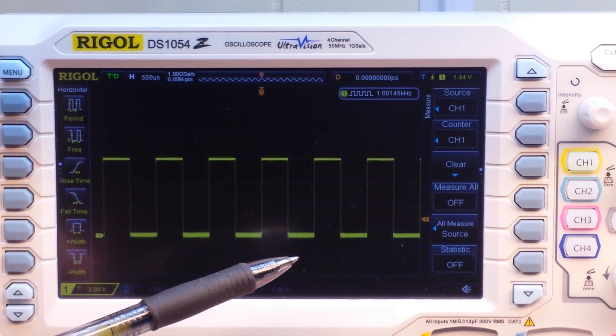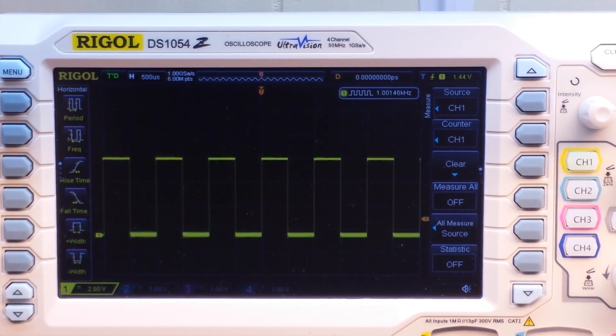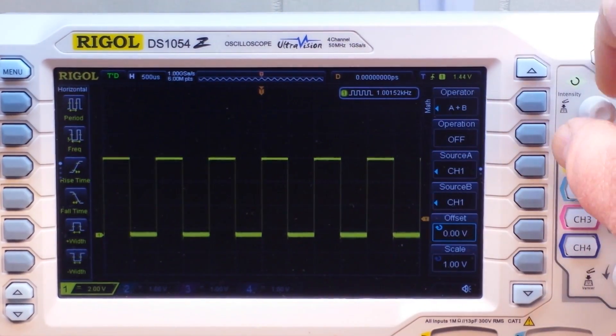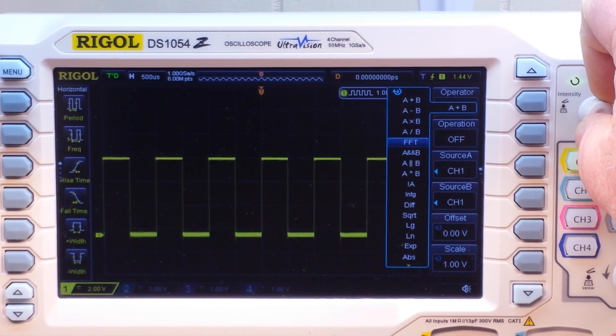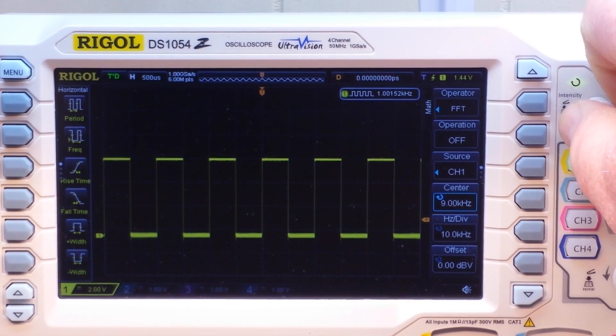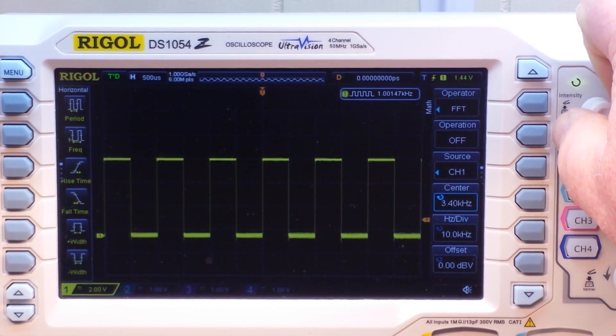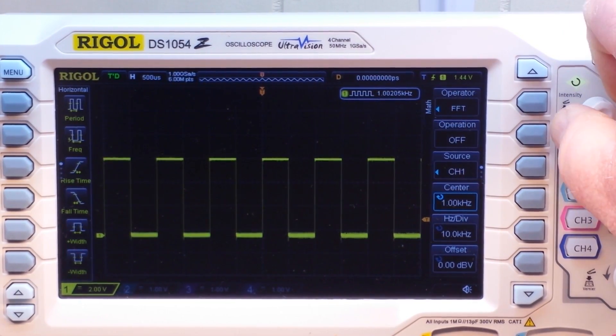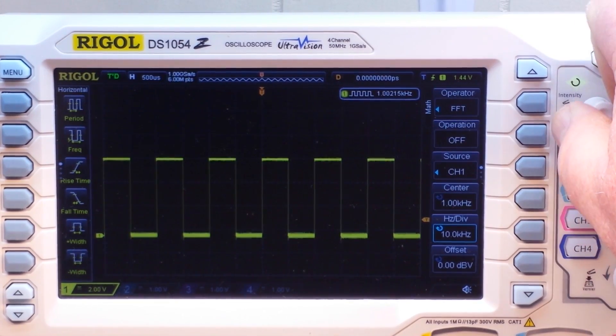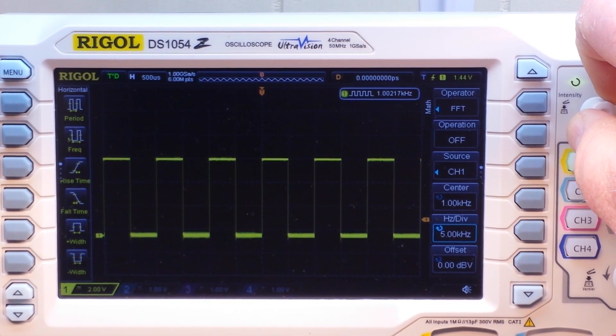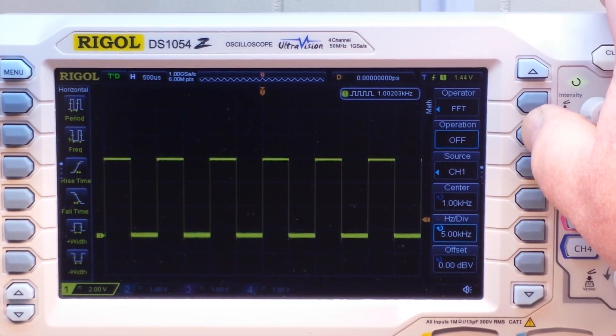This is called the time domain. That's where FFT comes in, fast Fourier transform. So if we bring up our math menu and we select the fast Fourier transform, I'm going to set my center frequency at one kilohertz, and my horizontal division, let's say at five kilohertz, then we'll turn it on.